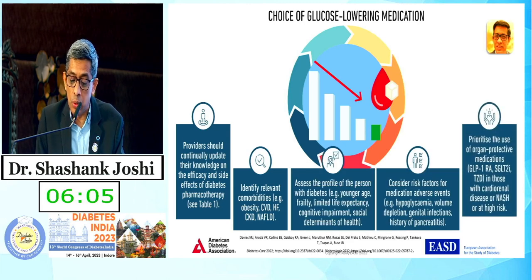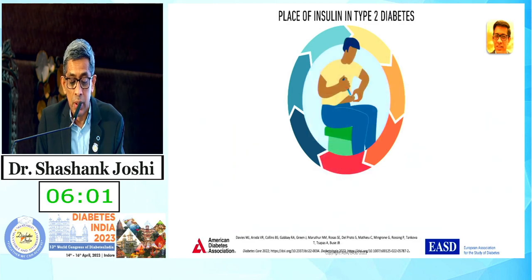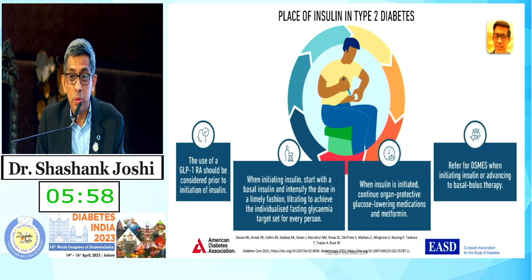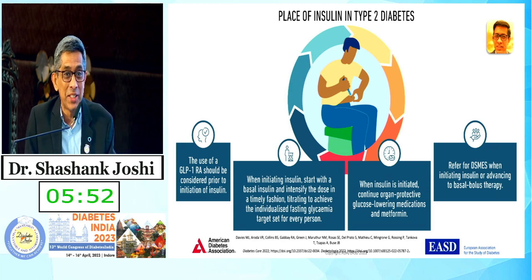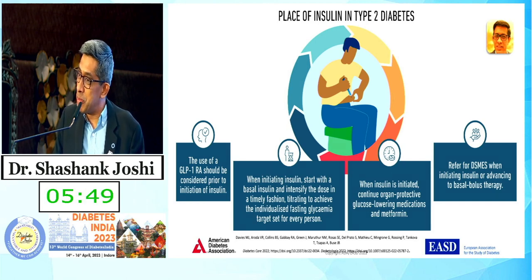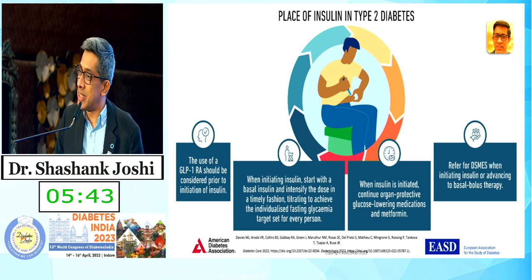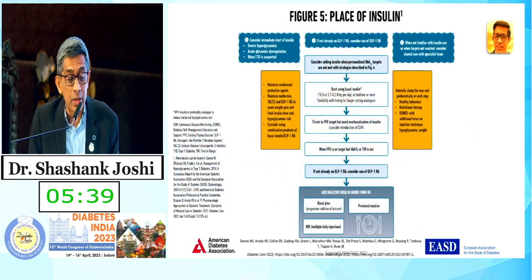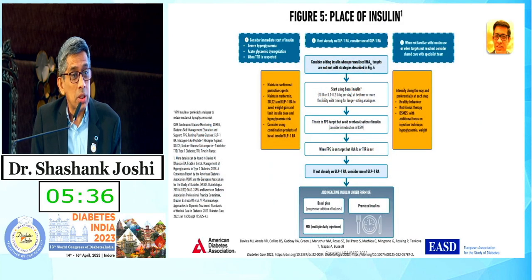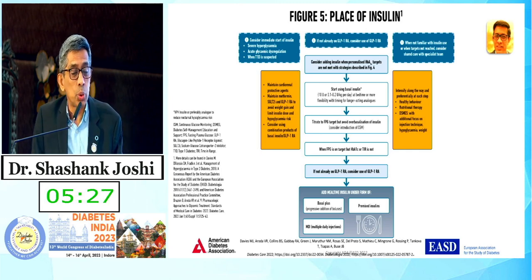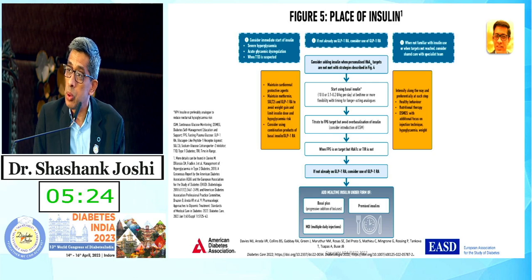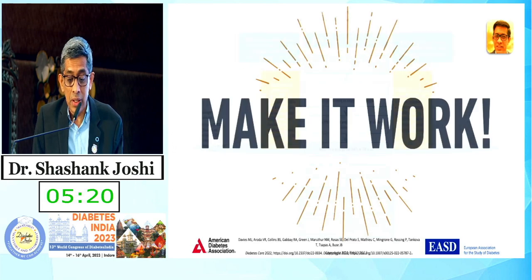Glucose medicines are important. Insulin still has a place — please don't forget insulin. The 10-10-10 formula: you need to break the inertia, initiate insulin with 10 units of glargine at 10 PM, get a blood sugar of 110 next day morning, and get the A1C below 7. Insulin is still important. We have just completely abandoned it — that's not right.